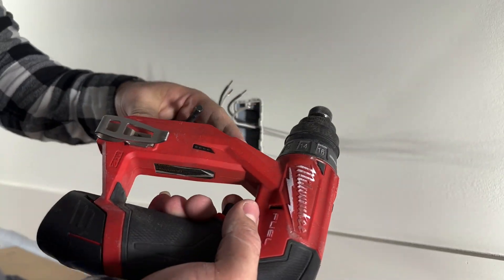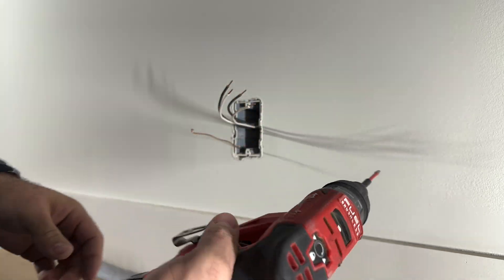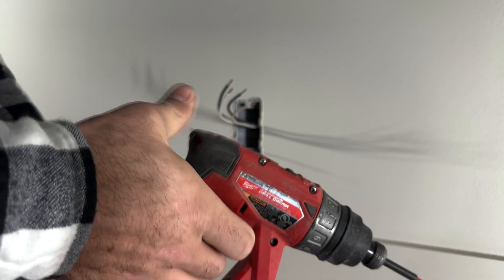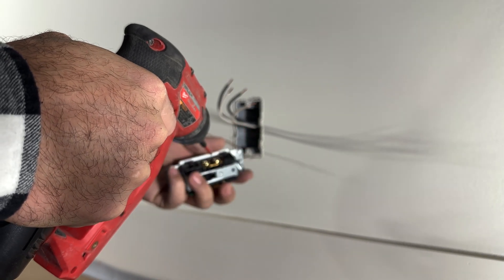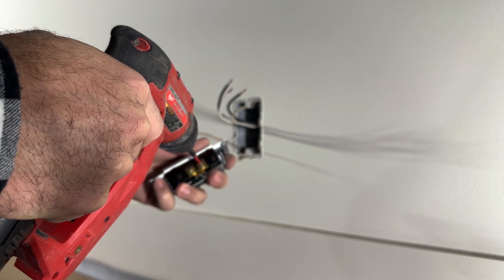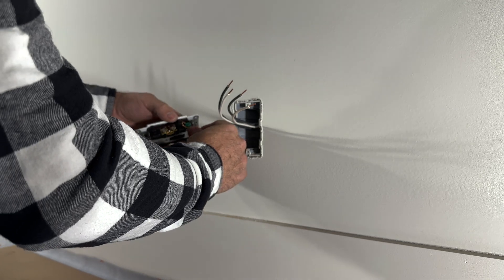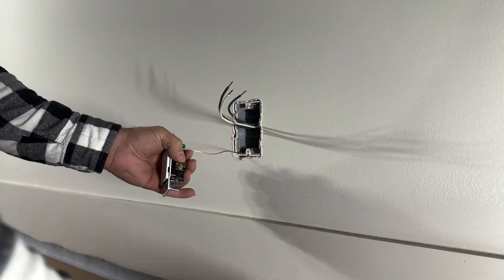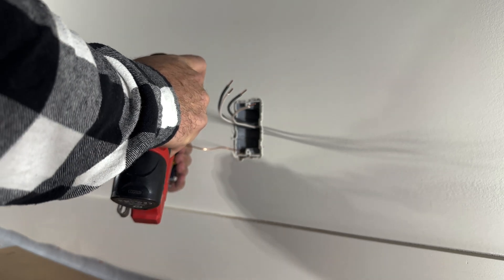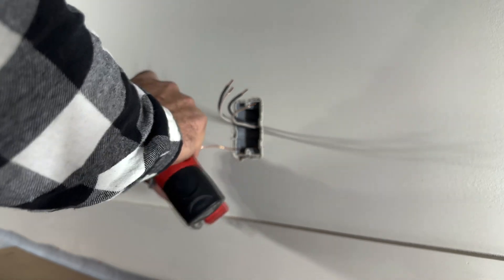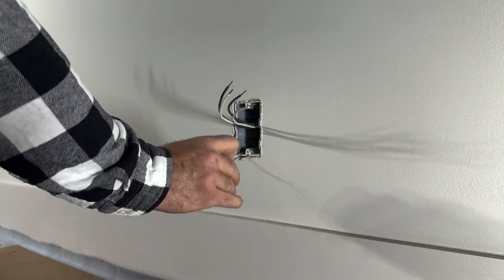We will swap out from a number two Robertson to a number one Robertson in our drill. Make sure our screws are loose. And we will start with the ground wire. It is very convenient when you place your ground wire on the left side of the box because that is where the ground screw for the receptacle is located.